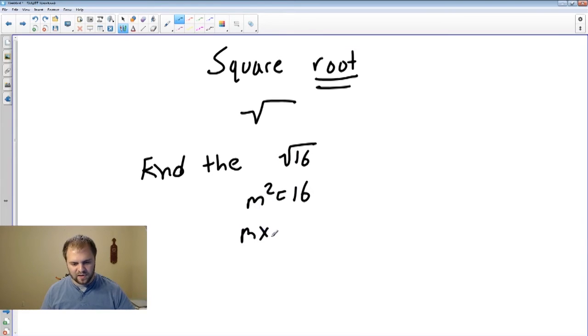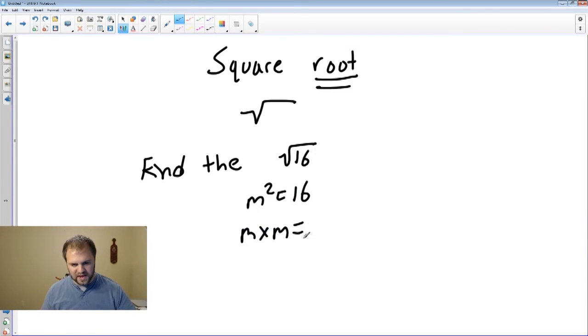Well, we know if you break it down again, M times M equals 16. M must be 4. Because 4 times itself equals 16. Thus, the square root of 16 equals 4.